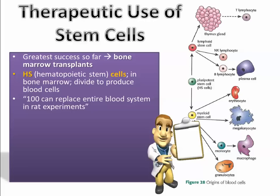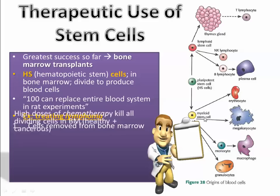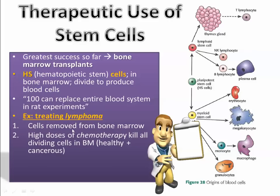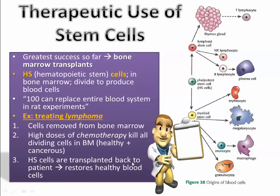Very few of these HS cells can replace the entire blood system, because each stem cell can reproduce to form more stem cells and also become specialized. In treating lymphoma — a type of blood cancer — the sick person's cells are removed from their bone marrow, since they are dividing uncontrollably. The remaining cancerous and healthy cells are killed using chemotherapy, so a new source of healthy HS cells is needed and transplanted back to the patient to restore the healthy blood system.